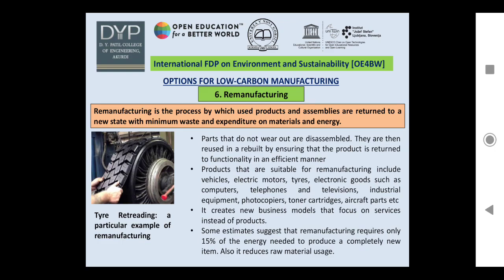Some estimates suggest that remanufacturing requires only 15% of the energy needed to produce a completely new item. It also reduces raw material use and therefore has a positive impact in terms of lower carbon emissions. One prominent example is tire retreading for remanufacturing.